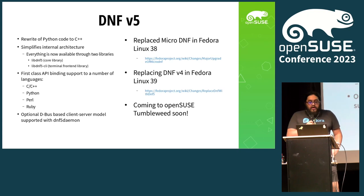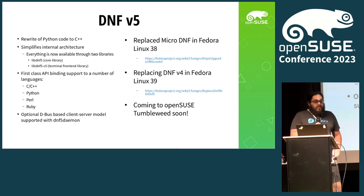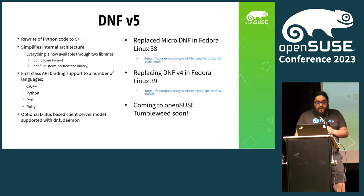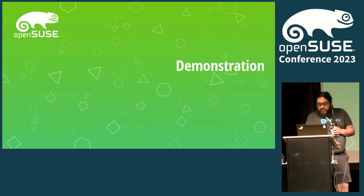As of right now, DNF5 in Fedora has replaced microDNF, which was an alternate C implementation of DNF for container-based things. With the upcoming Fedora Linux 39 release, it's going to replace the current DNF (also known as DNF version 4) as well. And with any luck, it will be in OpenSUSE Tumbleweed real soon now — I've been spending several weeks beating the crap out of it to make it all work.